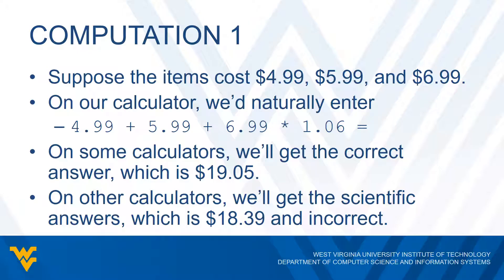The reason why is the way this is being entered. On scientific calculators, it's going to apply the proper order of operations, so it would multiply 1.06 with just the $6.99 instead of the total of all three items.